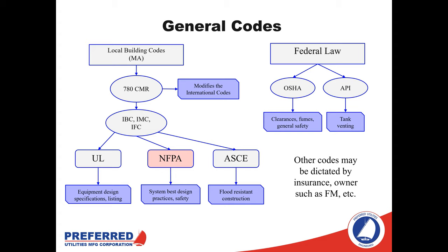Just a general overview — there are two basic places these codes originate from: local building codes and federal law considerations. Local building codes include things like UL listing for equipment, NFPA for best design practices, flood resistant construction requirements, and references from the International Building Code. For example, if we ask what a tank should be constructed from, UL or NFPA might answer that. But questions like how far a tank can be located from the wall would be dictated by federal requirements such as OSHA. There are many different places we would go to answer design questions.